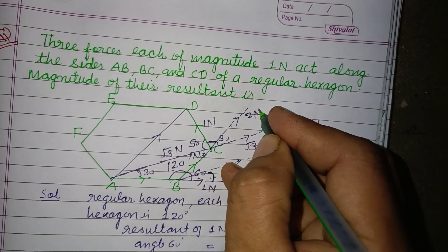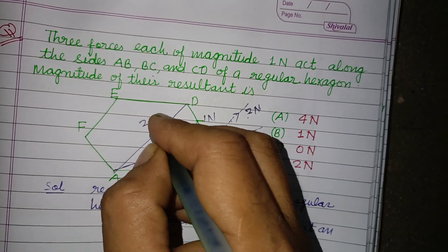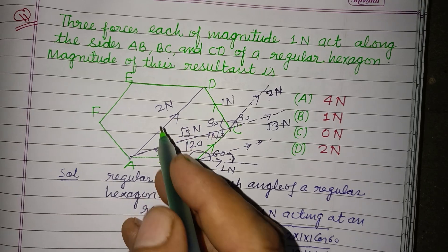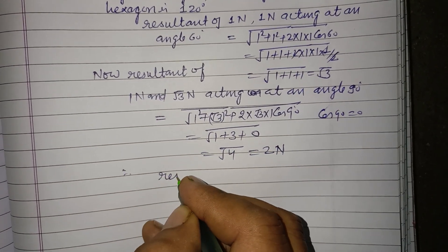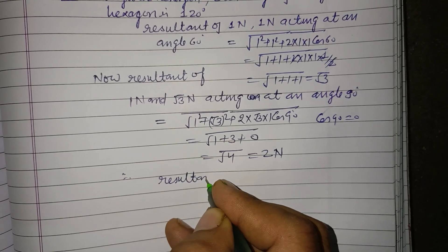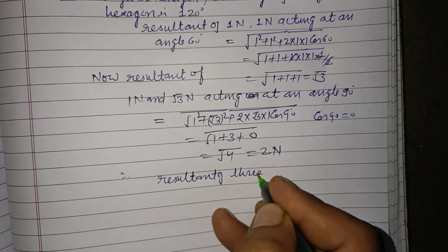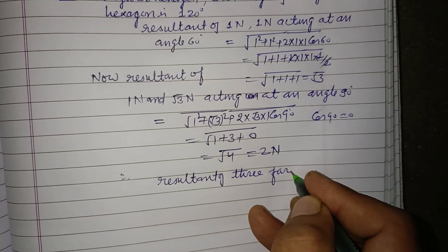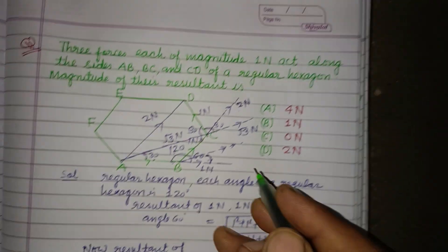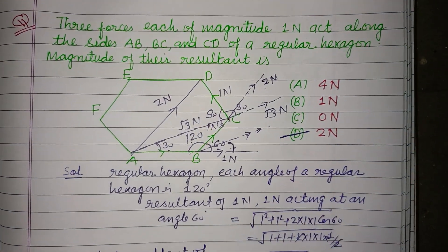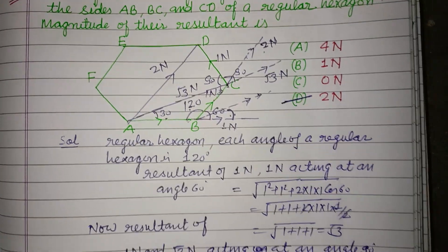So this will be 2 N which is parallel to this 2 N. Therefore resultant of 3 forces is 2 N. 2 N is the correct answer which is found in option D. Therefore option D is correct.